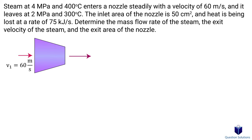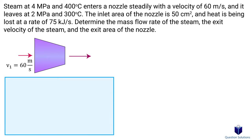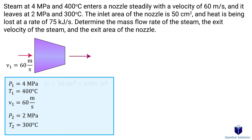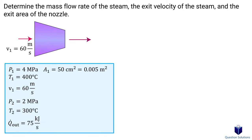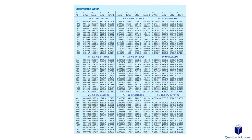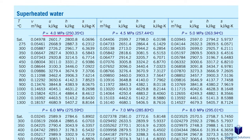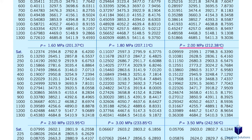In this question, steam enters a nozzle and we need to find the mass flow rate, exit velocity, and exit area. The initial pressure is 4 MPa, temperature is 400°C, and velocity is 60 m/s. The steam exits at 2 MPa and 300°C. The inlet area is 50 cm², and there is a heat loss of 75 kJ/s. We look up steam tables: at 4 MPa and 400°C we get the specific volume and enthalpy, and at 2 MPa and 300°C we get those values as well.